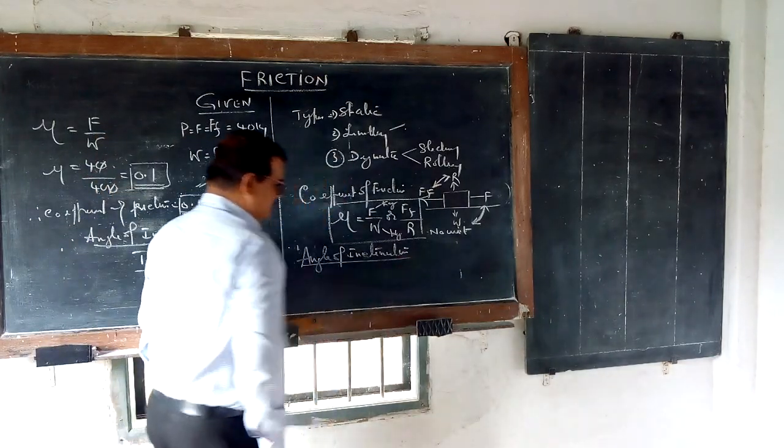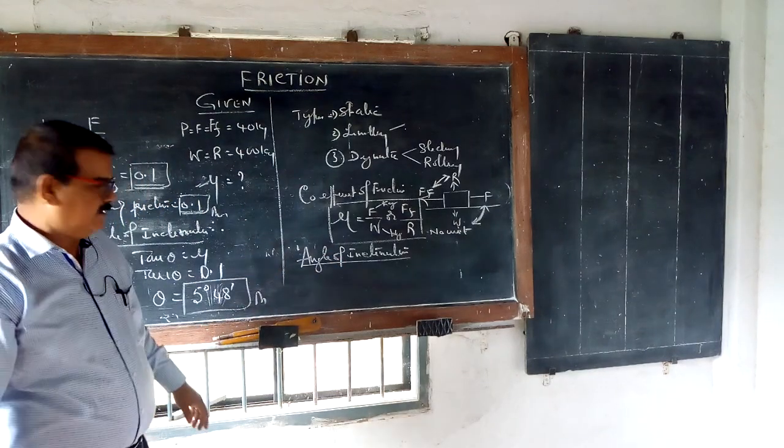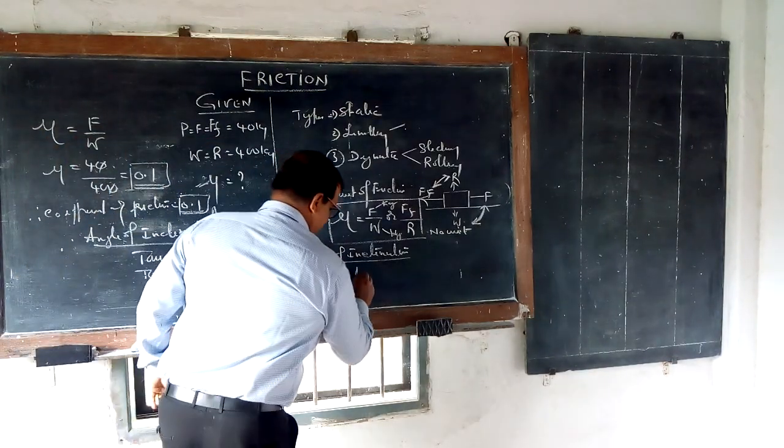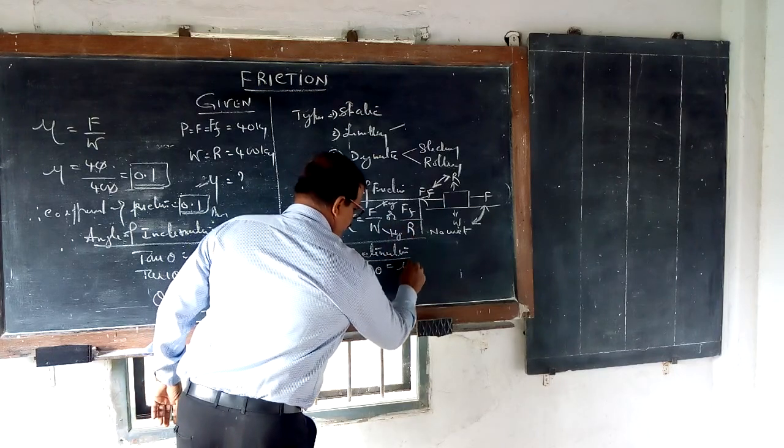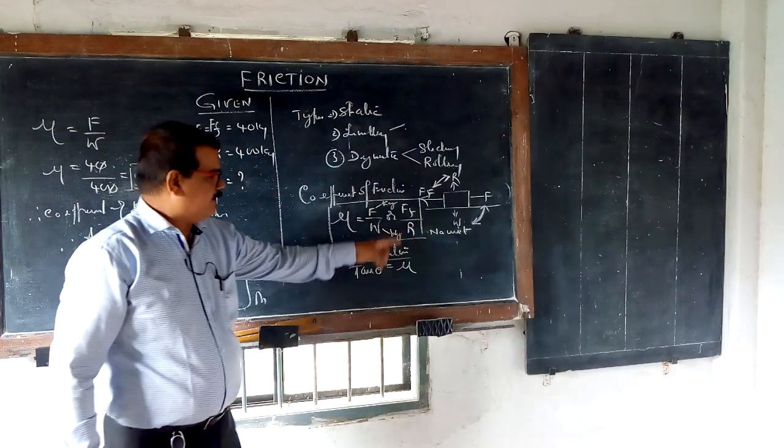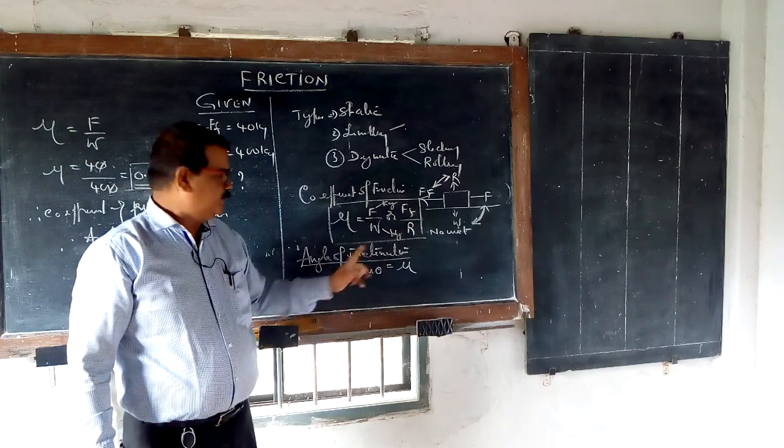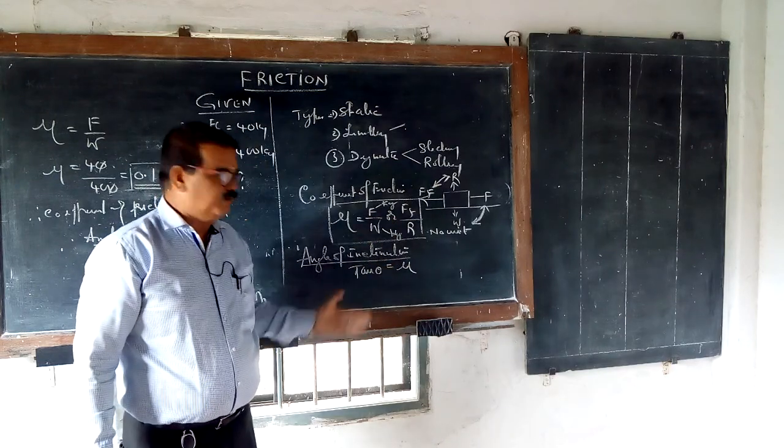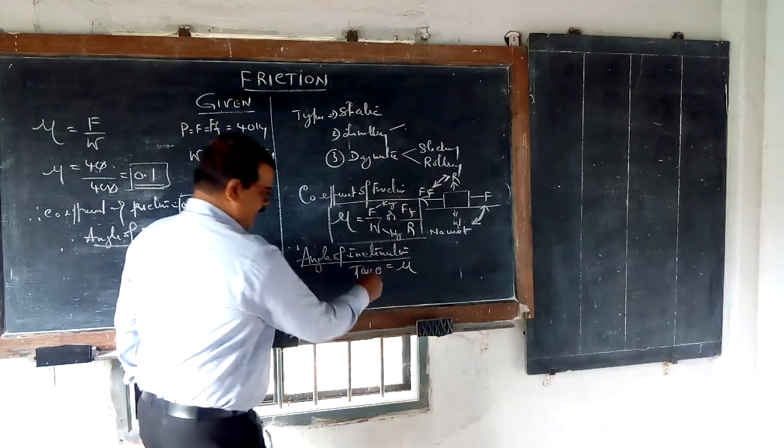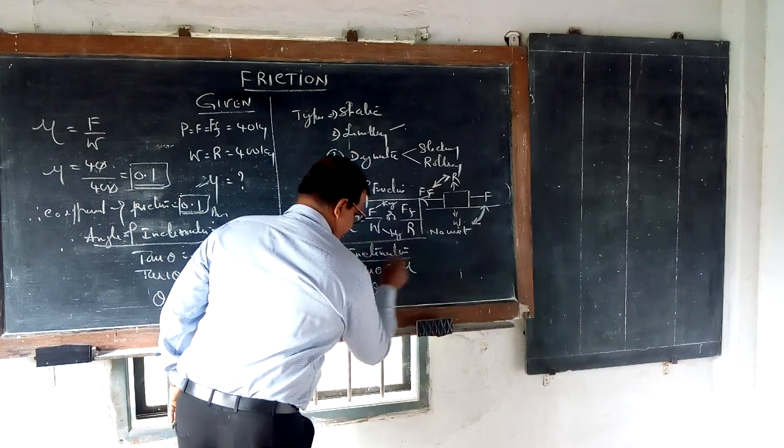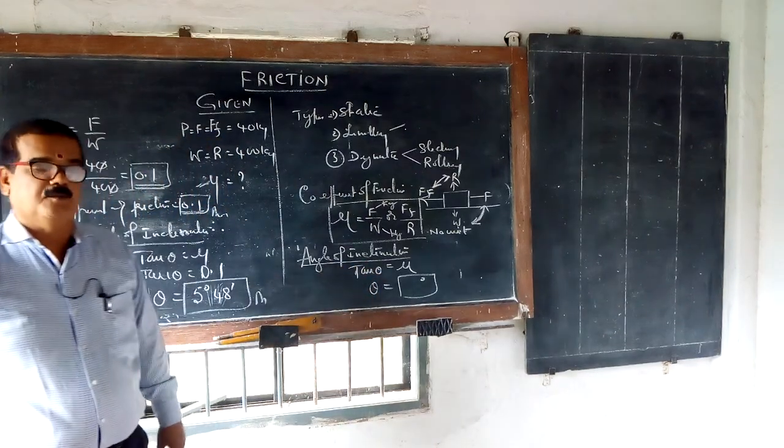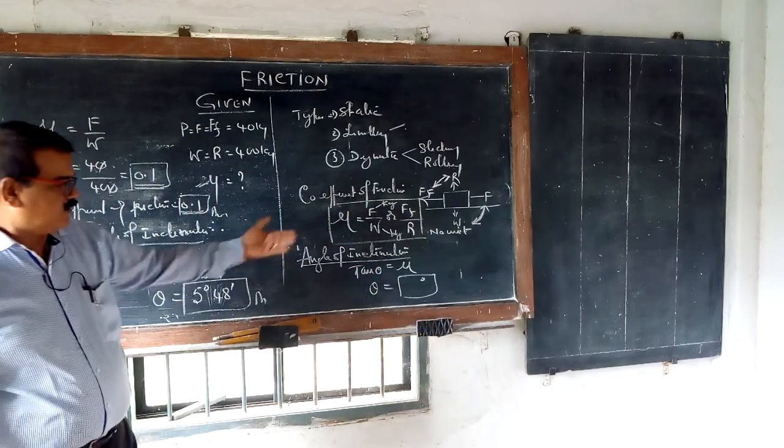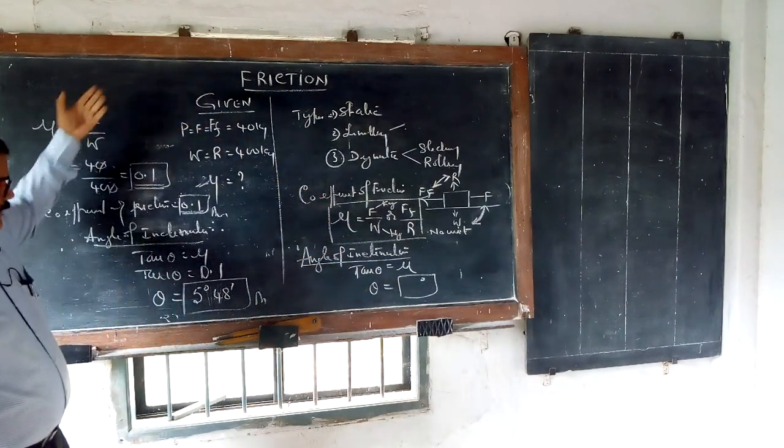The next part, angle of inclination. Look at here. This angle of inclination, what happens here? The formula says tan theta is equal to mu. Mu already you have calculated. Put the value of mu, we will get tan theta. After that, theta can be calculated by taking the tan inverse value. That will be so many degrees.